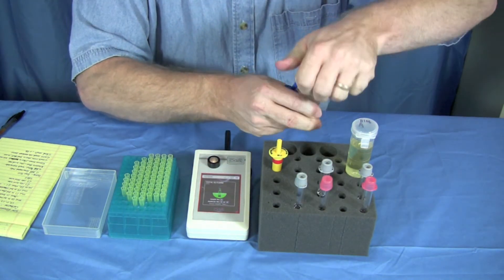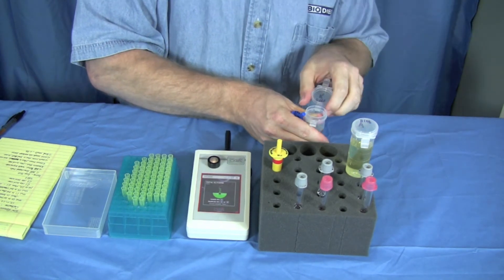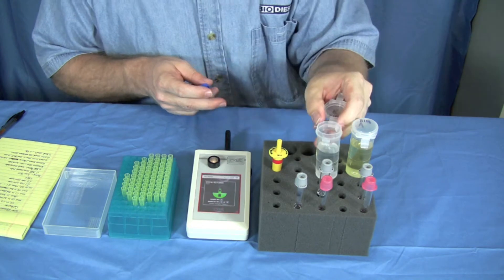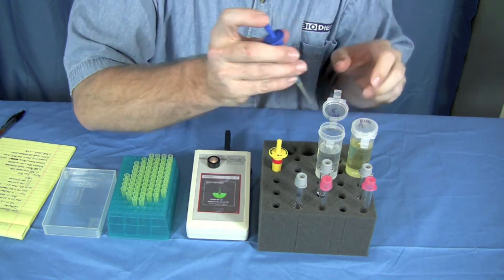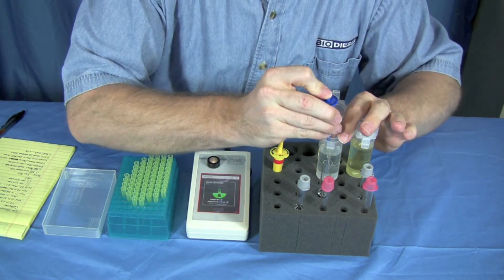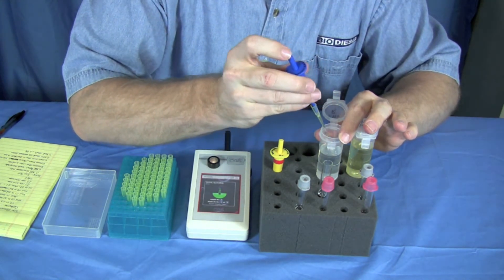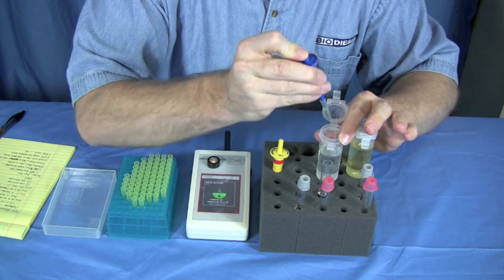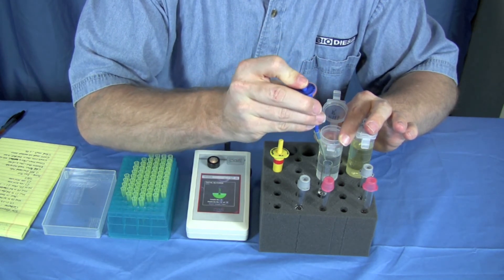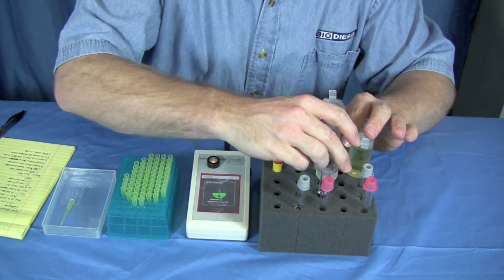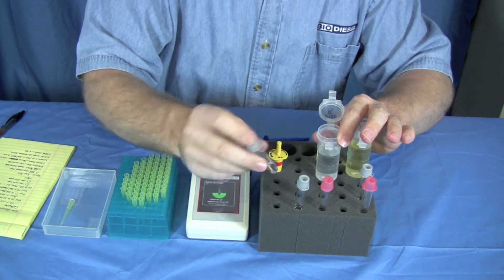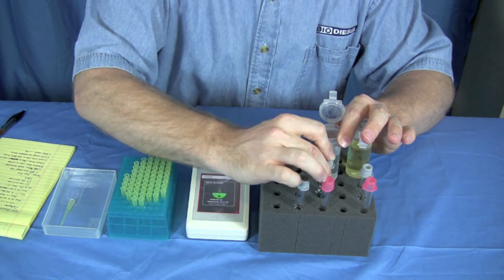We've got biodiesel that was made from coconut oil, believe it or not, which is why it's so clear. 100 microliters to start off with. Remove our cap. One, two. Cap it and you invert this three times. One, two, three. Good and mixed.